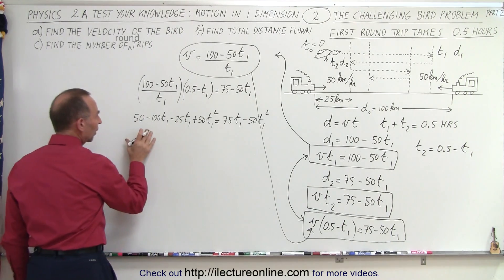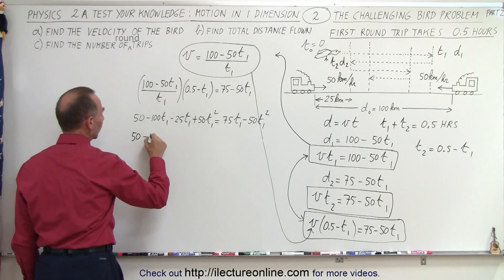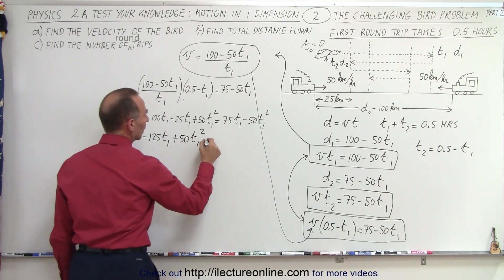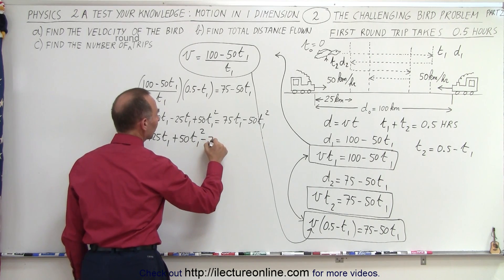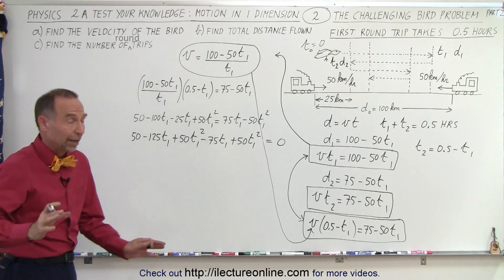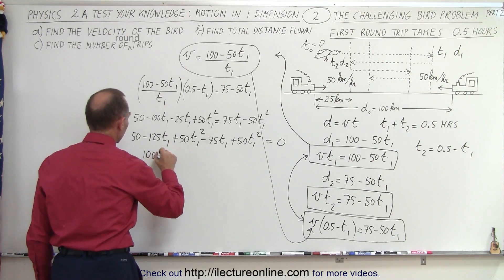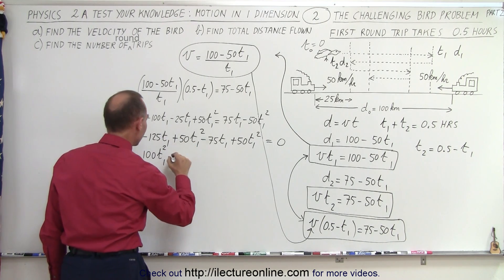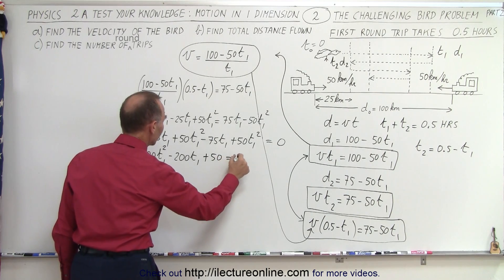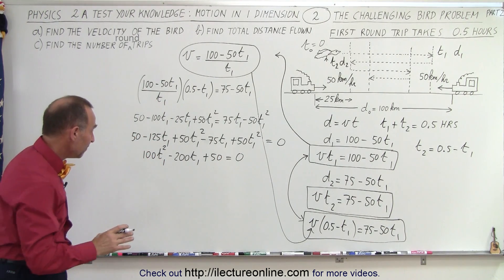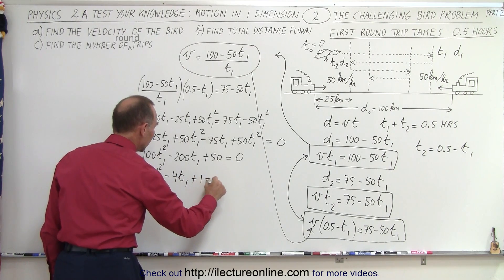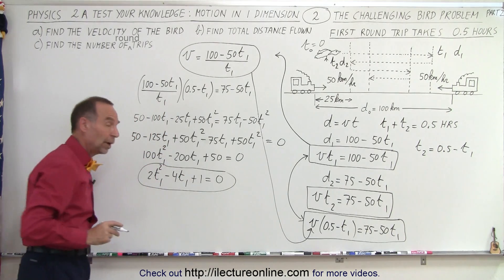Combining like terms and moving everything to one side, we get 50 minus 125 T1 minus 75 T1 plus 50 T1 squared plus 50 T1 squared equals 0, which simplifies to 100 T1 squared minus 200 T1 plus 50 equals 0. Dividing everything by 50 gives us 2 T1 squared minus 4 T1 plus 1 equals 0. That's a nice quadratic equation to solve.